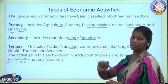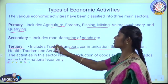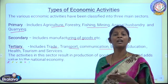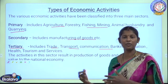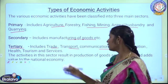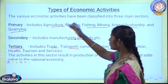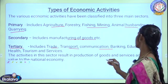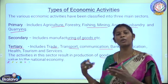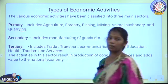From the primary and secondary sectors we get some products — so the primary and secondary sectors produce goods, whereas the tertiary sector produces only services. It does not produce any goods, but it provides services to the people, such as communication and transportation. The goods and services produced by all three sectors add to the national economy.